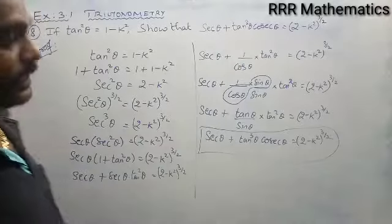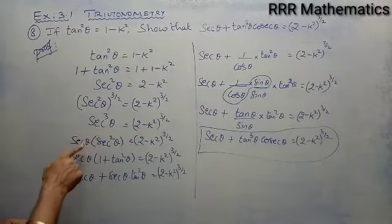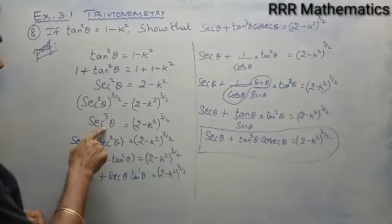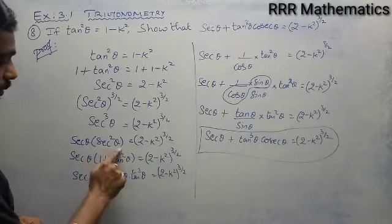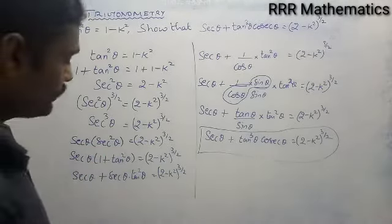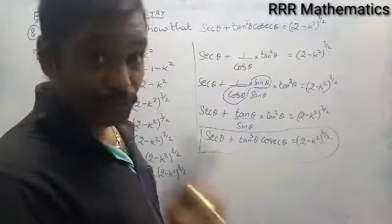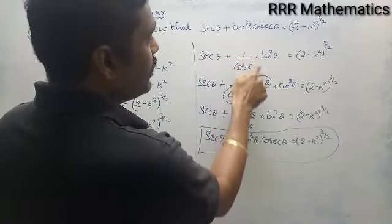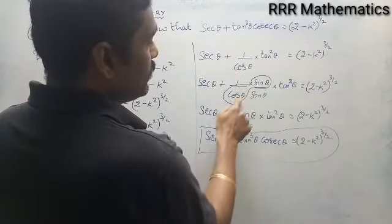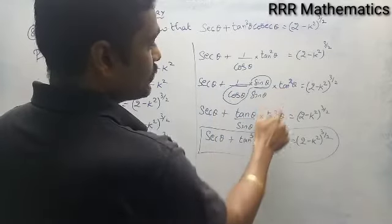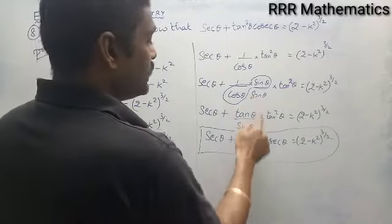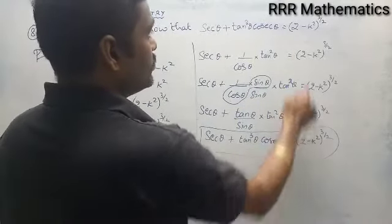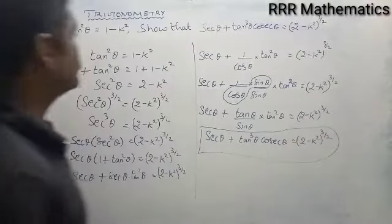The secant cube theta is written as secant theta into secant squared theta. Secant squared theta is written as 1 plus tan squared theta, then I multiply through. Secant is 1 by cos, but in the proof I need tan cube, so I multiply and divide by sin. Sin divided by cos becomes tan, tan into tan squared becomes tan cube, and 1 by sin becomes cosecant. Therefore secant theta plus tan cube theta into cosecant theta equals 2 minus k squared whole power 3 by 2. That's all — is it clear?